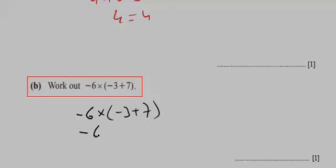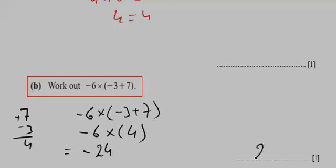We first solve the bracket. -6 × (-3 + 7): -3 + 7 becomes 4, just like 7 - 3 = 4. Then when you multiply -6 × 4, it equals -24. So the answer is -24.